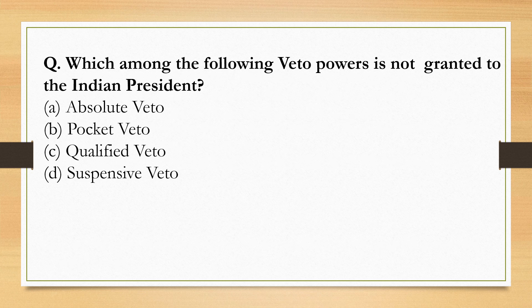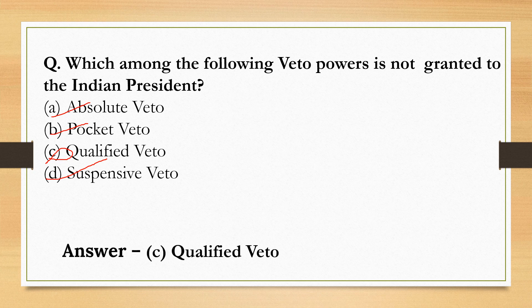Which among the following veto powers is not granted to the Indian President? Absolute veto — given. Pocket veto — given. Qualified veto — NOT given to the Indian President. Suspensive veto — given. So the correct option is Option C.